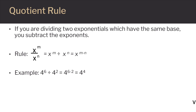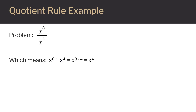Remember, when we're dividing, we're going to subtract exponents. Here's another example: x to the eighth power over x to the fourth power. This is in fraction form and means x to the eighth power divided by x to the fourth power. We can use the quotient rule to simplify this by subtracting the exponents. The new power on x is eight minus four, which ends up being four. So our answer is x to the fourth power.